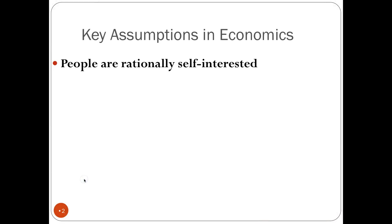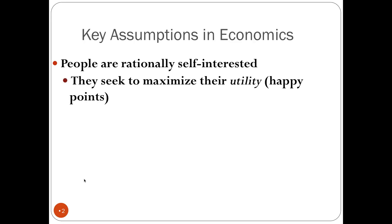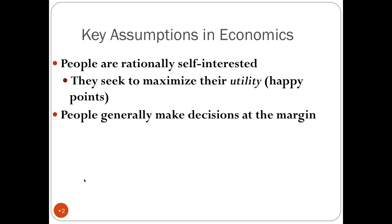Let's review some key assumptions in economics. Number one, people are rationally self-interested, and they seek to maximize what's called utility. Utility is also known as happy points — if something gives you utility, it gives you satisfaction and happiness. For example, I really like basketball, so basketball gives me utility. Think to yourself: what are some things that give you utility? That's a very important economics word right there.